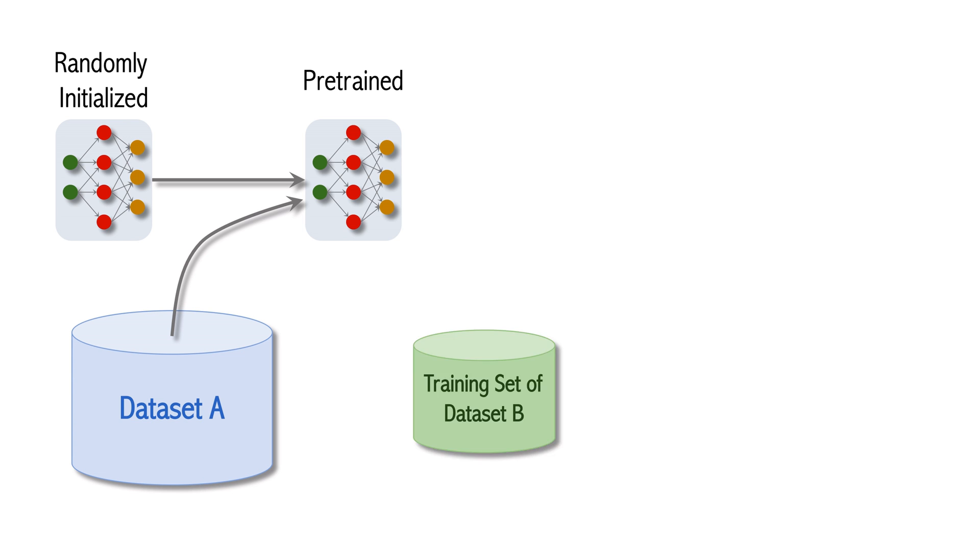Next, train the model on dataset B. It is typically smaller than dataset A. This step is called fine-tuning. To this end, we have finished training the model.